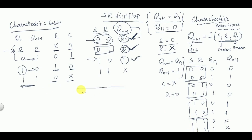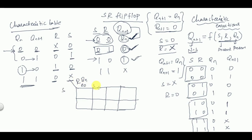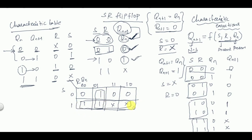Since there are three variables, we draw a three-variable K-map with axes SR and QN. Filling in the values and don't cares, we can form one quad group giving output S, and one pair group giving output R̄·QN. Therefore the characteristic equation is: QN+1 = S + R̄·QN.